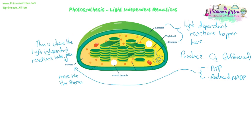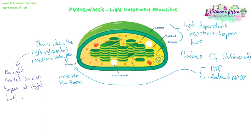They're called the light independent reactions because no light is needed for them to take place, so they can obviously happen at night. When we talk about photosynthesis not happening at nighttime, it's not completely correct. What we're actually saying is the light dependent reactions can only happen in the daytime. The light independent reactions can happen at night, but they do need the products of the light dependent reactions - so they can only function until the ATP and reduced NADP that we make in the light dependent reactions runs out.